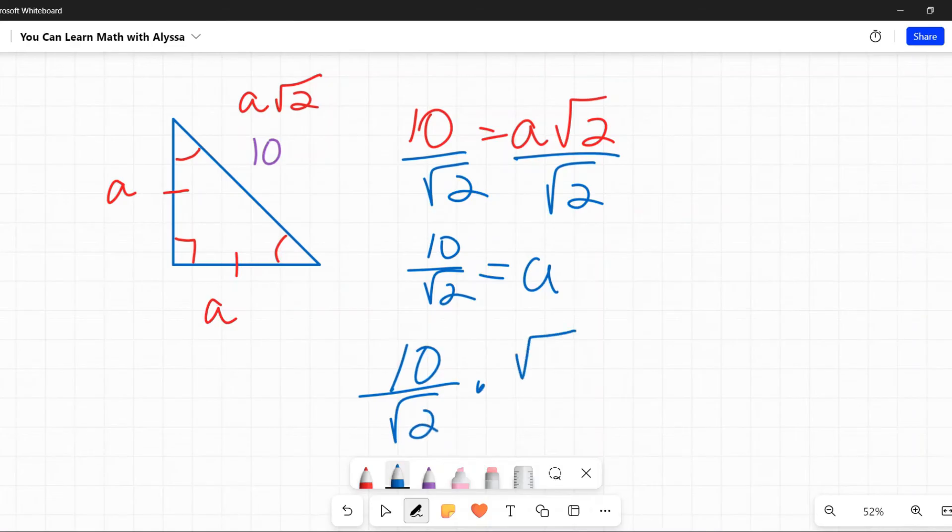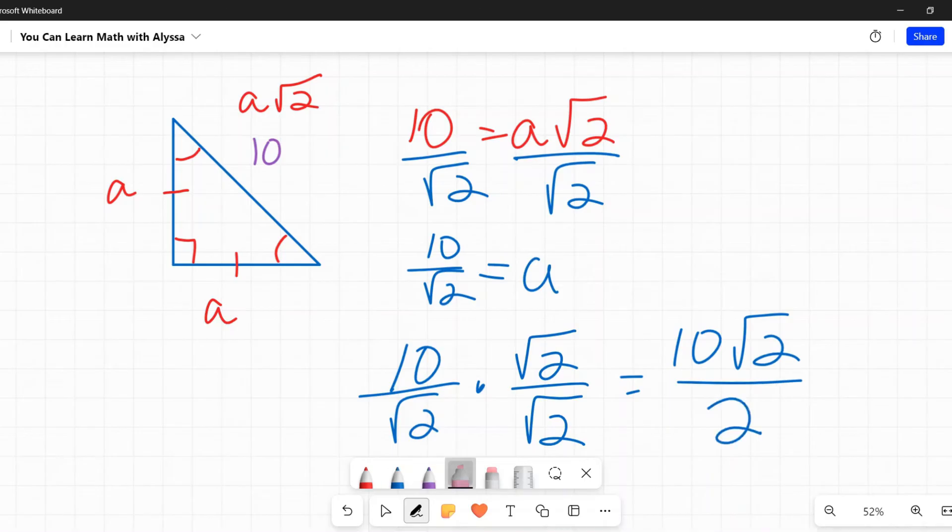To simplify this, you would need to multiply by that bottom square root over itself, in this case √2/√2. So on top you get 10√2, on the bottom √2 × √2 = 2. You can then simplify this a little further and get 10√2/2 = 5√2 as your final answer.